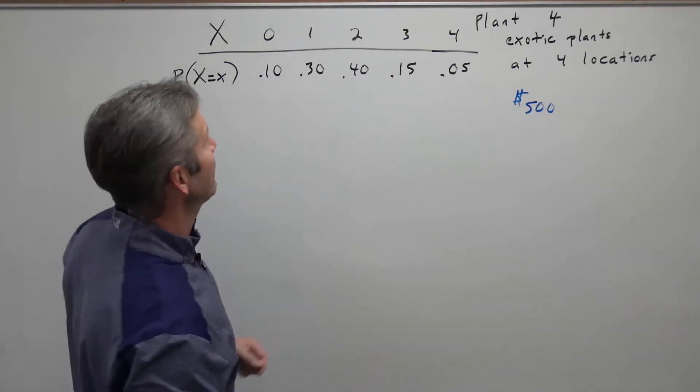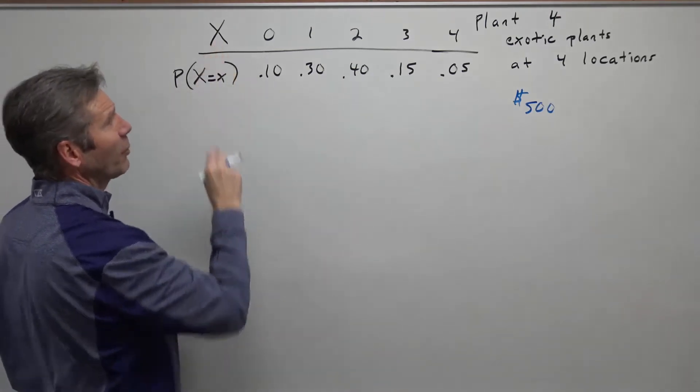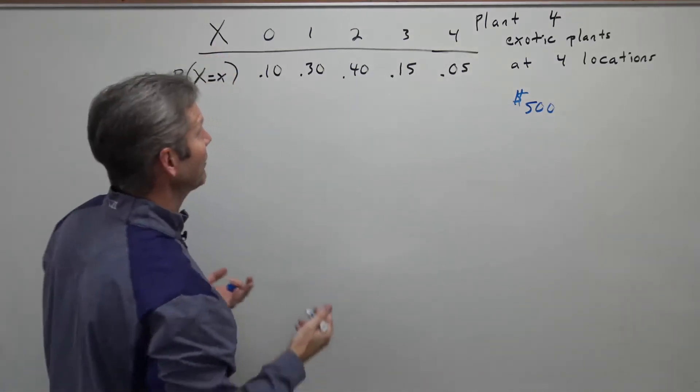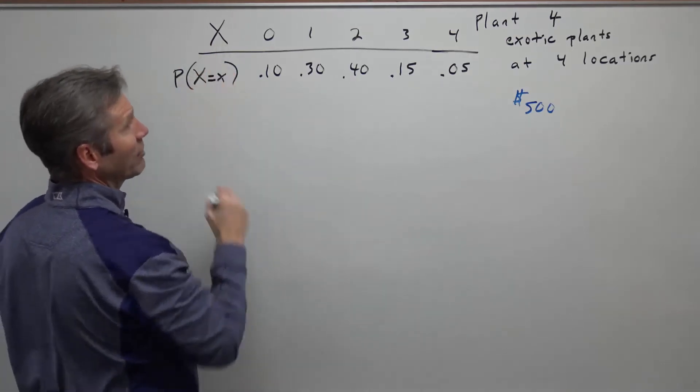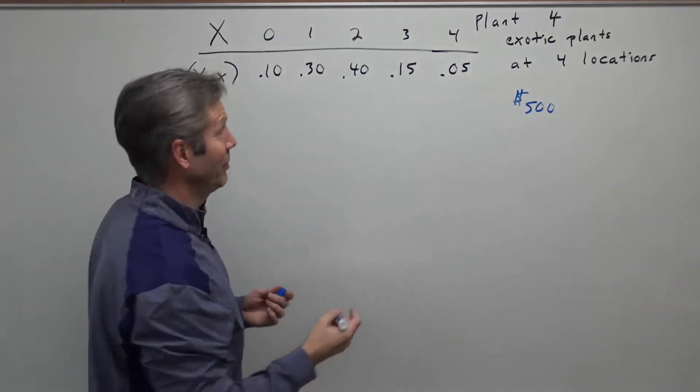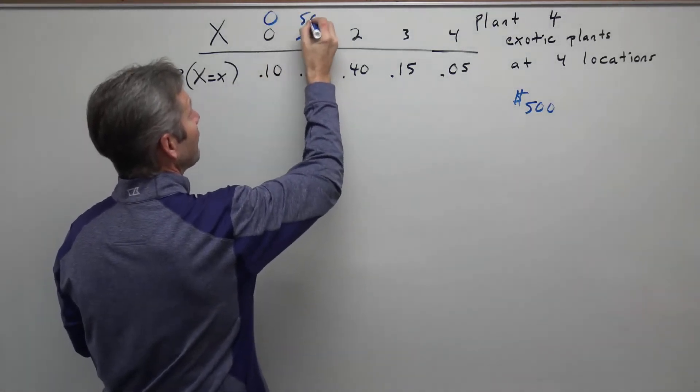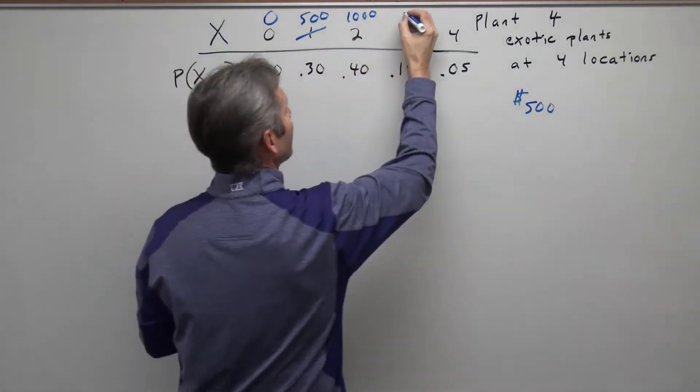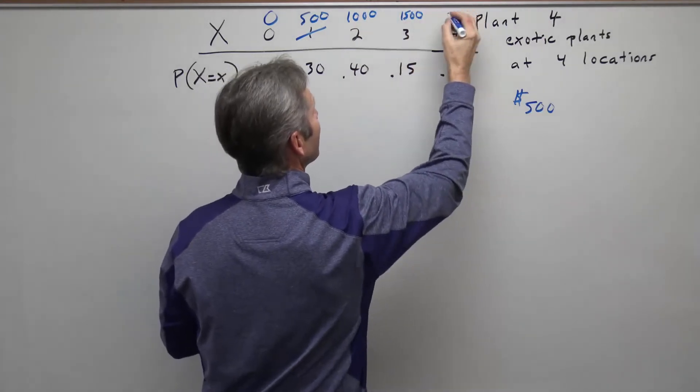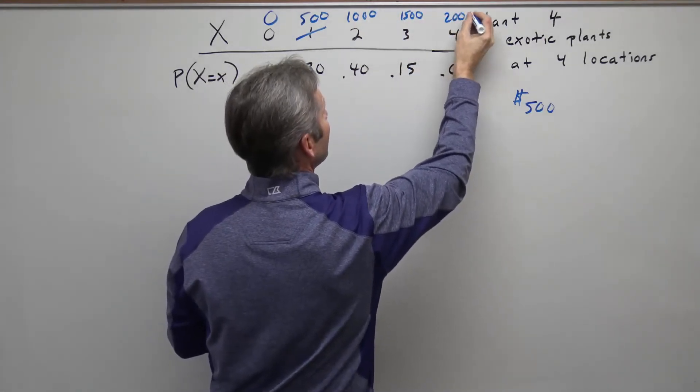So now we could state that instead of the random variable being the number of successes, the random variable is now how much money you're going to make. If none survive, you make $0. If one survives, you get $500. If two, it's $1,000. If three, it's $1,500. And if four survive, it's $2,000.